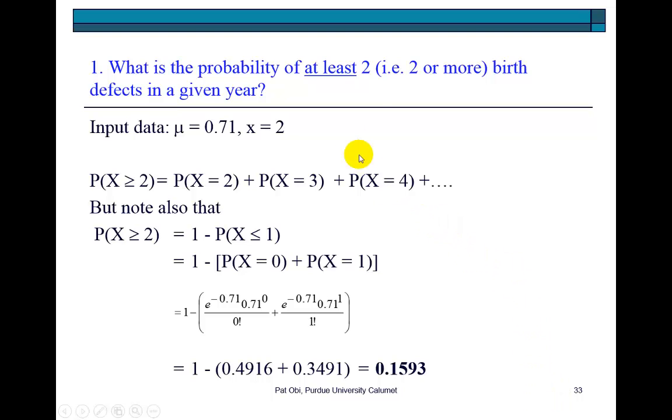Now it says, what is the probability of at least two, meaning two or more? Two or more, keep in mind, would be the probability that x is equal to 2, 3, 4, 5, on and on. But remembering that the maximum value of probability is 1, we can also express it as 1 minus the probability of x equal to or less than 1. The probability that x is equal to or less than 1 would be the probability that x takes on the value of 0 and the value of 1. So we can individually calculate these two probabilities using the formulas I show here and then add them up and subtract from 1. And that's what I did here to get 0.1593.